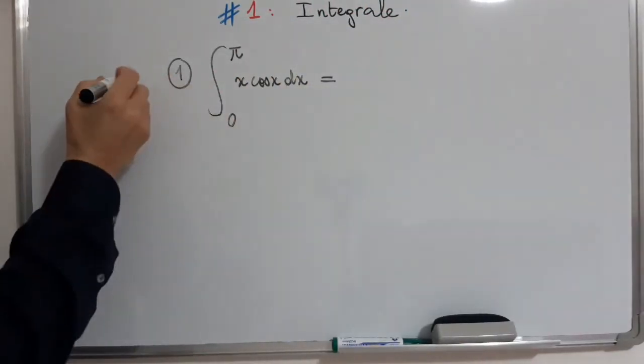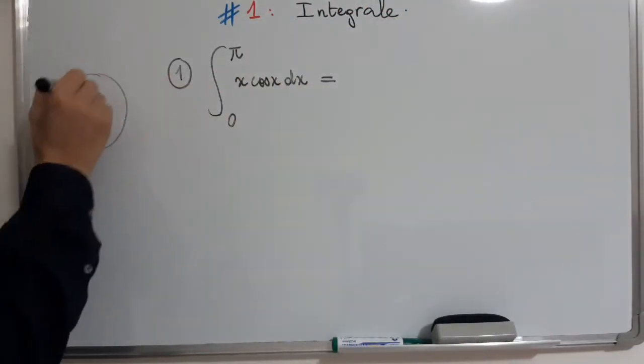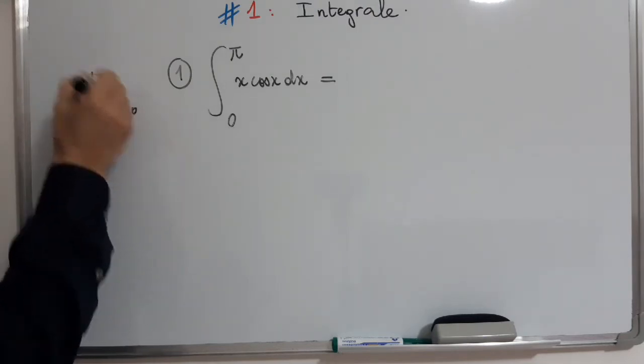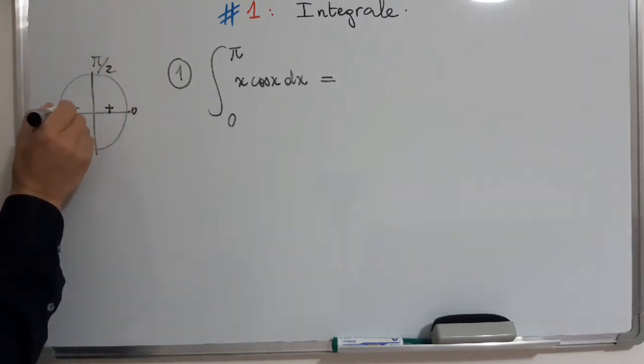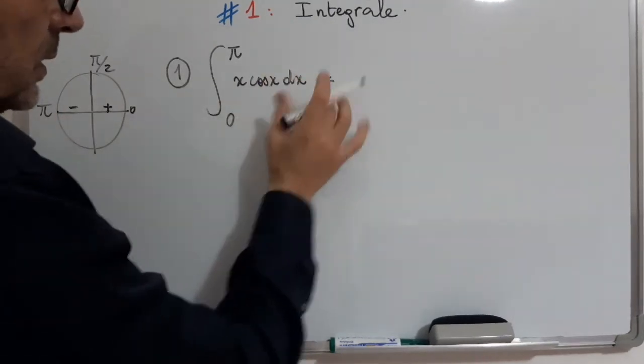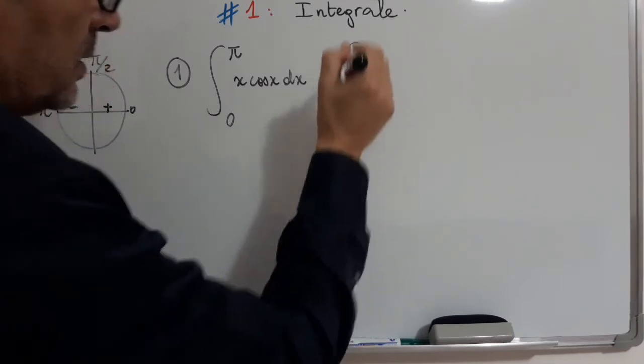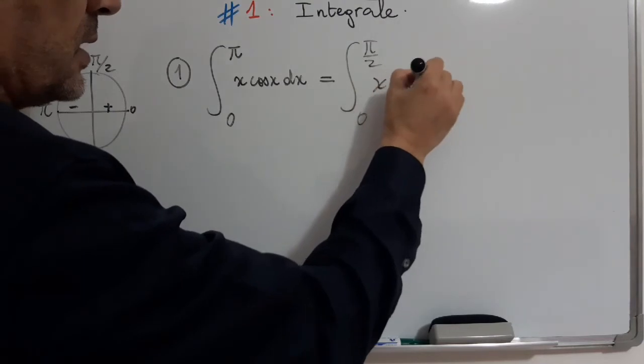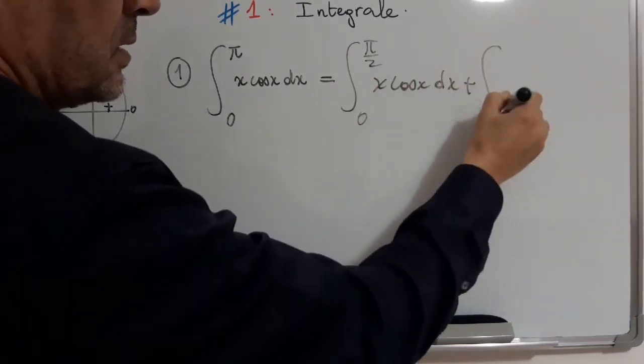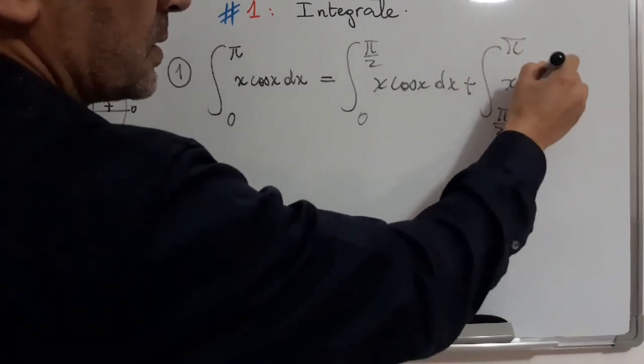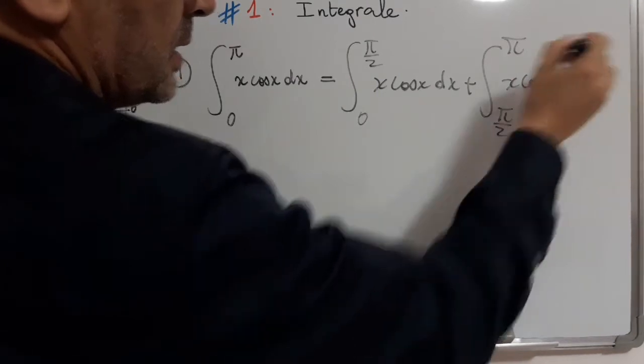Okay. Now, first observe that cosine is positive in the interval 0 to π over 2, and it's negative π over 2 to π. So, we take this form: integral 0 to π over 2 x cos x dx plus π over 2 to π x cos x dx.